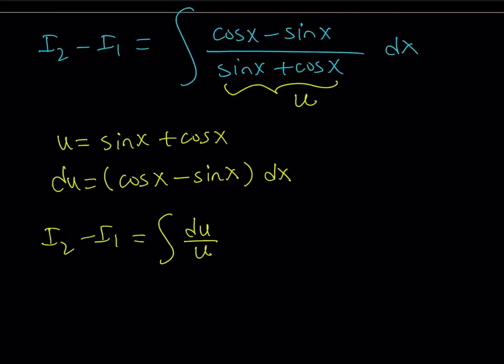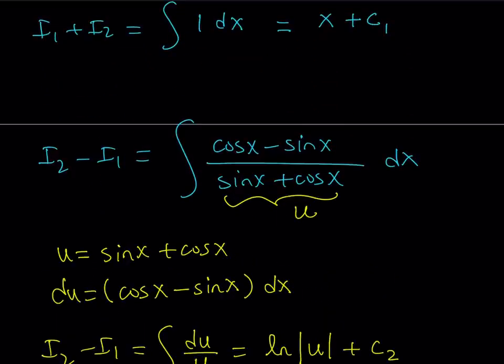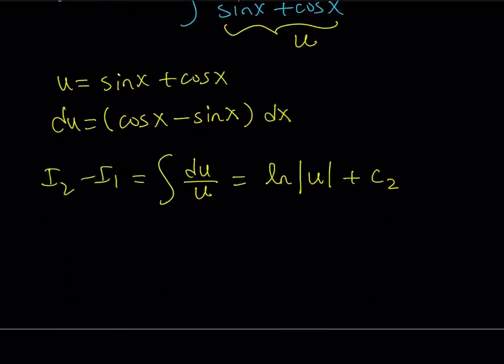How do you integrate 1 over u du? It's ln, the natural logarithm. I know some people write it as log, but I use log for base 10. I use ln for natural logarithm. So this is going to be ln absolute value of u plus c2. I want to use a different constant, because they don't have to be the same. But what is u? Let's back substitute. So from here, I2 minus I1 is going to equal ln absolute value of u, which is sine x plus cosine x. As you know, this can be negative on some intervals, so let's leave it at absolute value and write it like this.